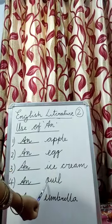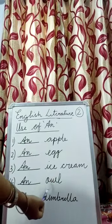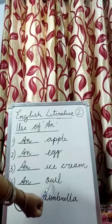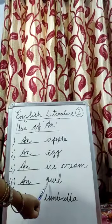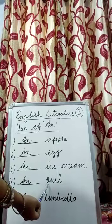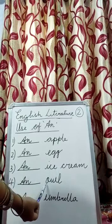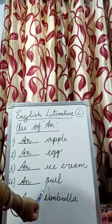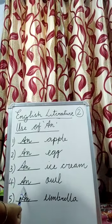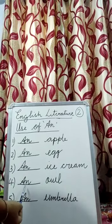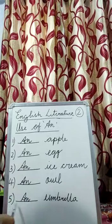Fourth one is OWL — O, W, L. So it starts with what letter? O. O is what, children? A vowel. So what you will use here? AN.